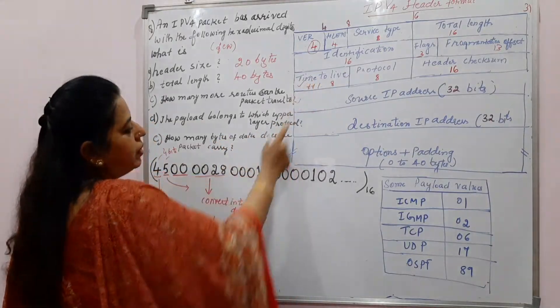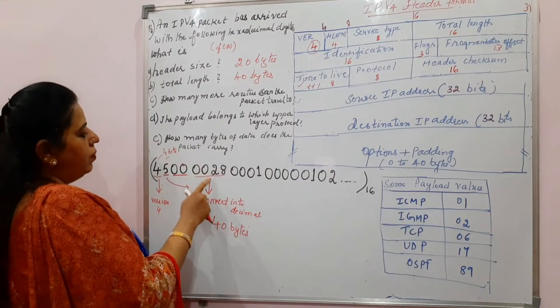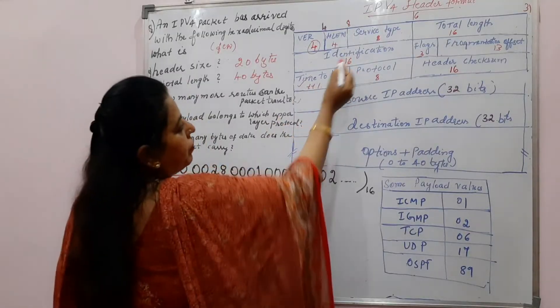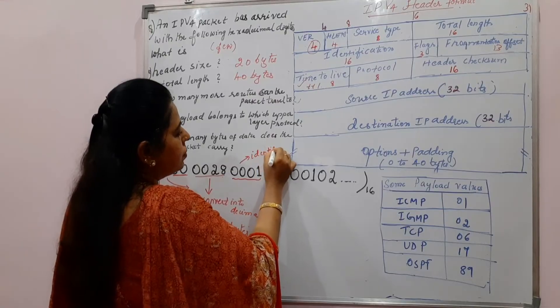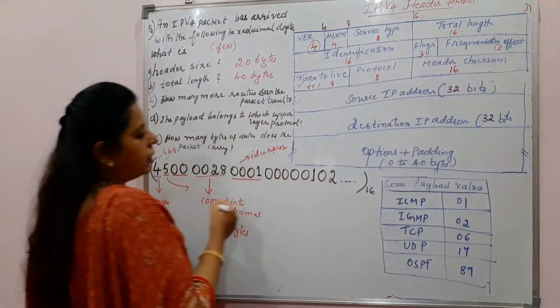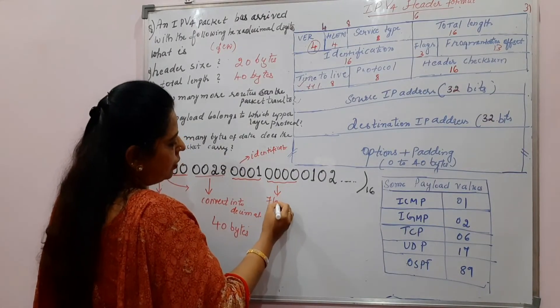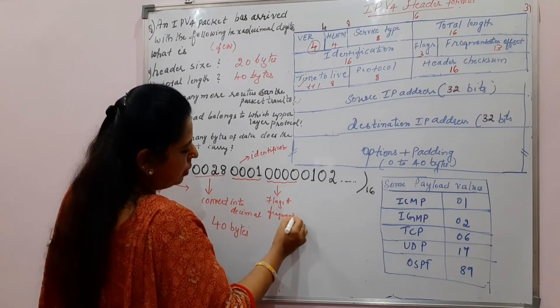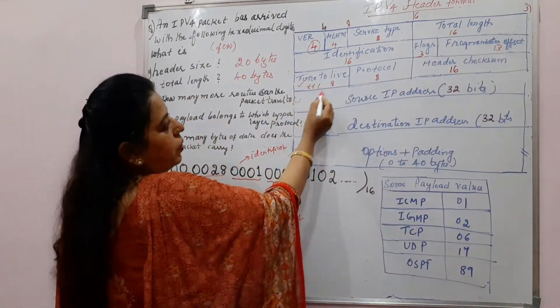You have to identify the value that is present here in this sequence of numbers. We will do like this, total length we have completely covered but the next is identification. Identification is 16 bits. These are identification values. Flag, 3 bits, fragmentation offset 13 bits. 3 plus 13, 16. The next 16 also, we will just write here. It is not asked but flags and fragmentation. These bits denotes flags and fragmentation. You have covered this. The next part is time to live.